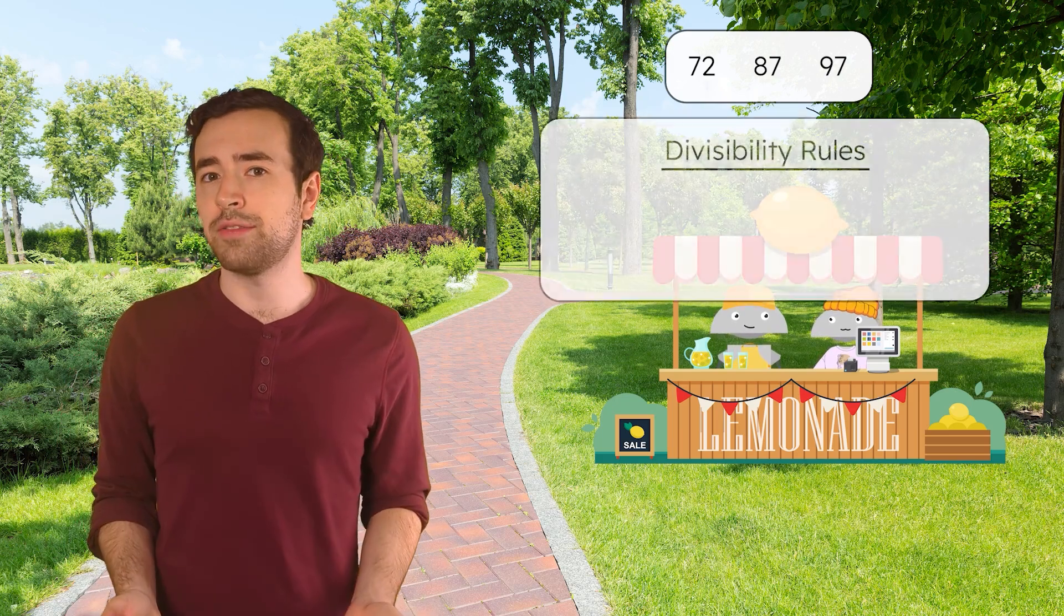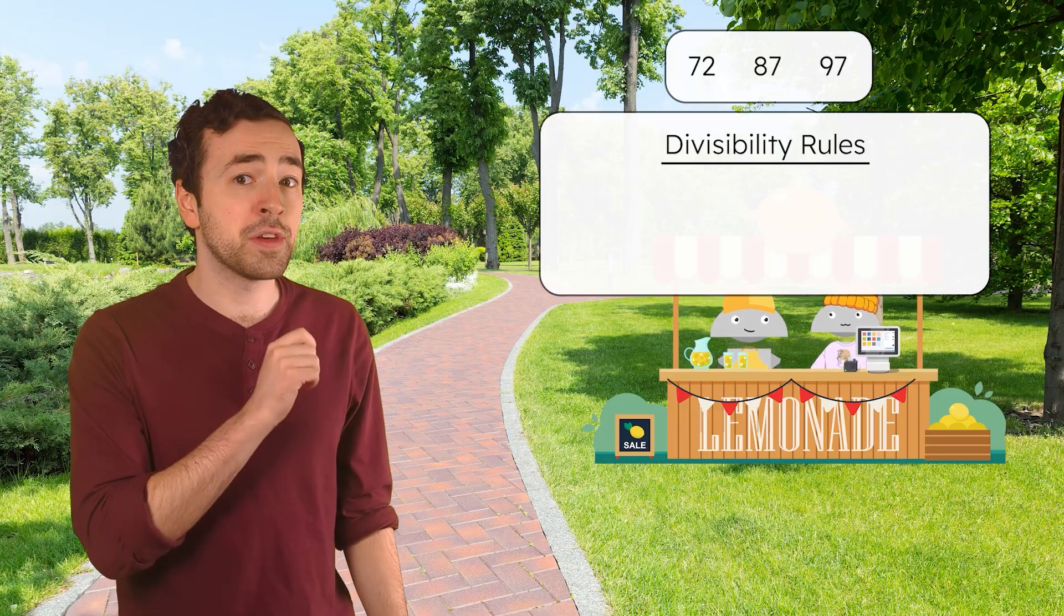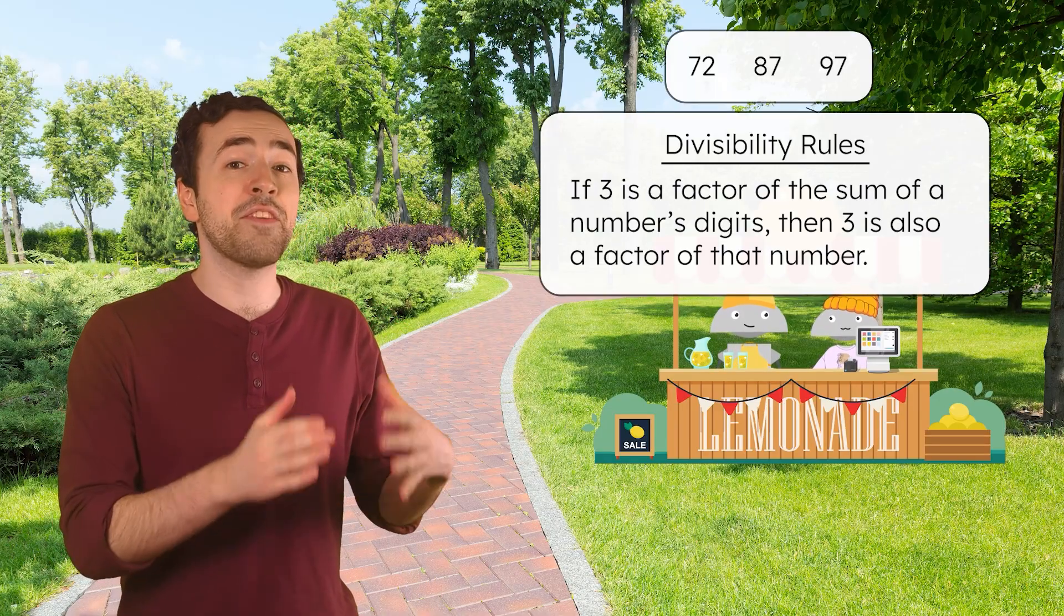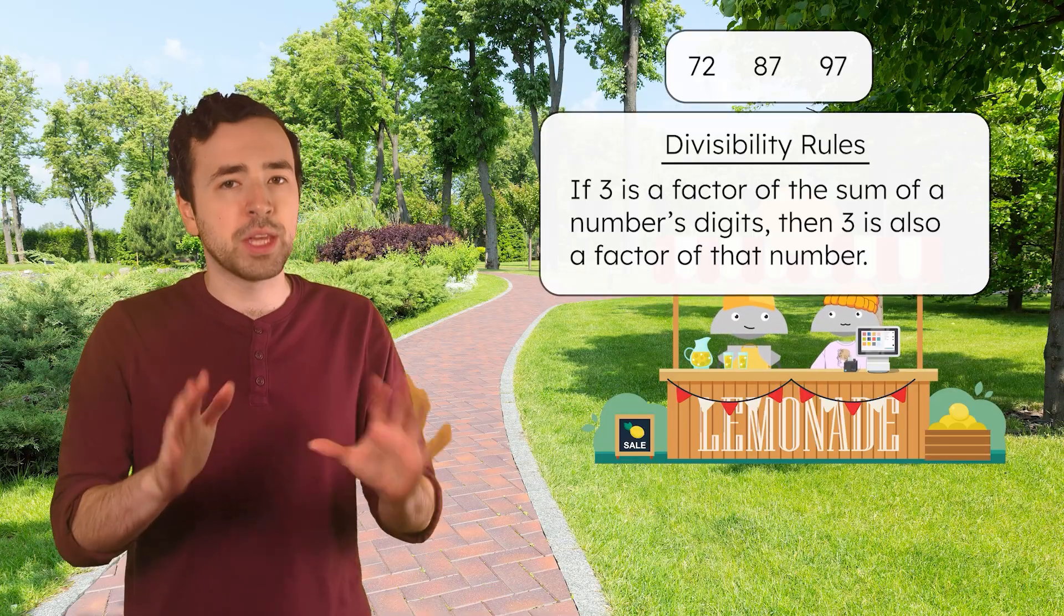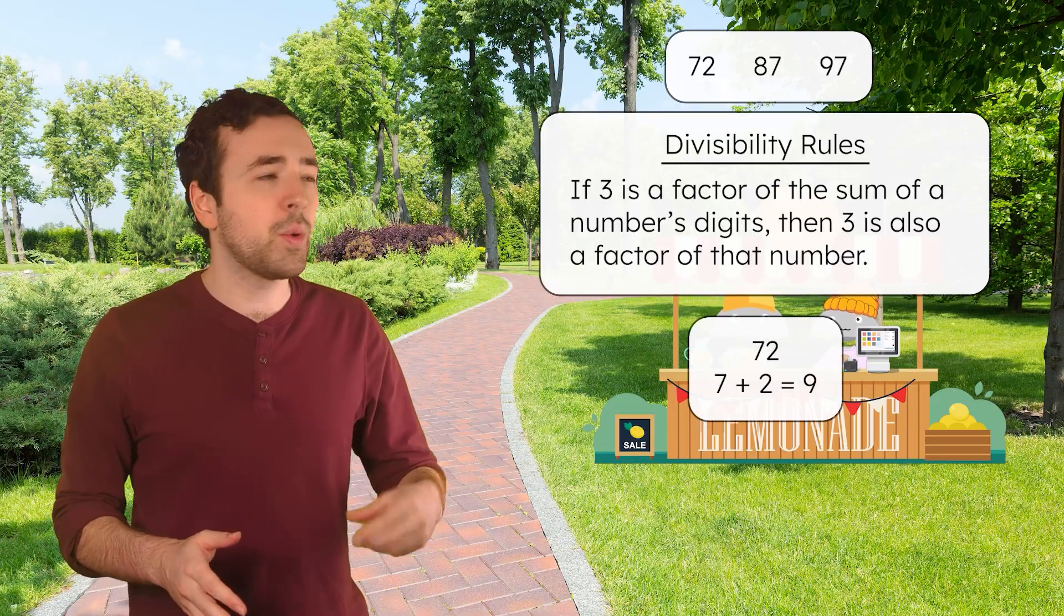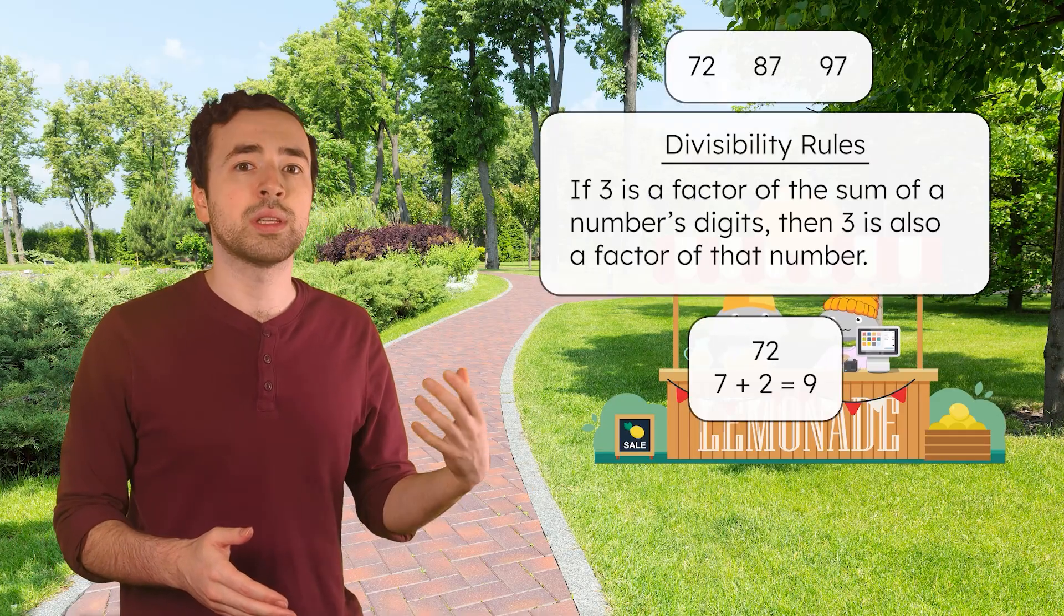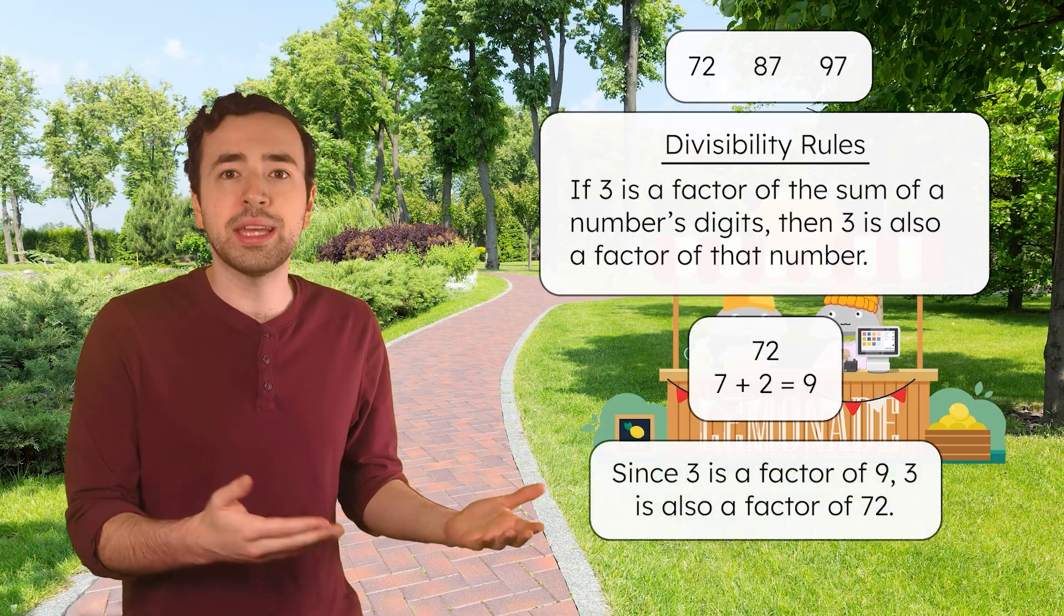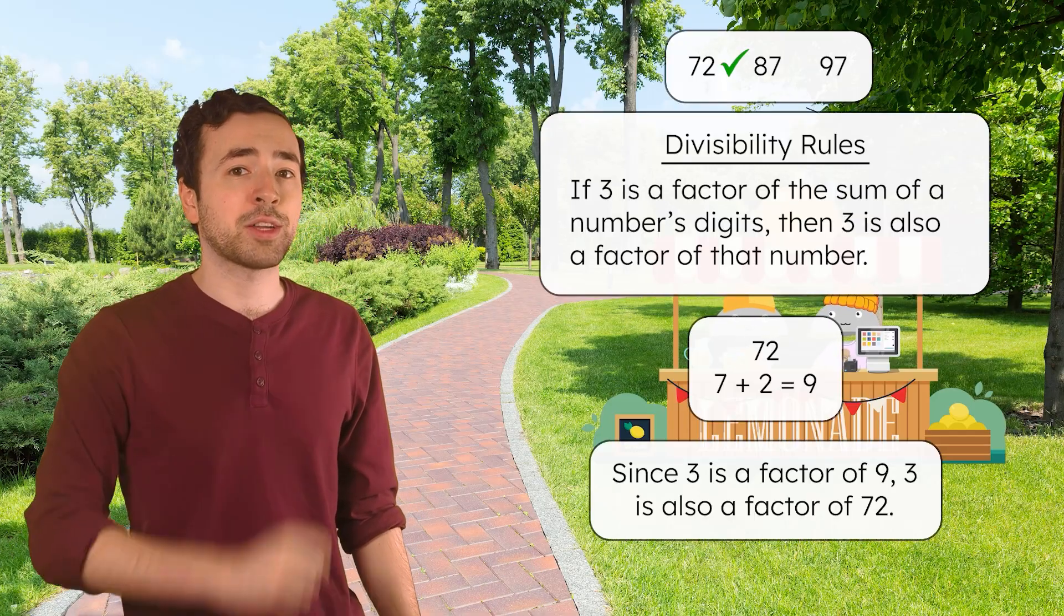3s, 4s, and 6s also have divisibility rules. To test if 3 is a factor, we can add the digits of the number. If 3 is a factor of that sum, then 3 is also a factor of that number. Here's an example: with 72, adding the digit 7 and the digit 2 equals 9. And since 3 is a factor of 9, 3 is also a factor of 72.